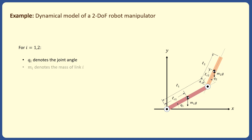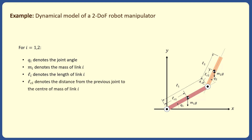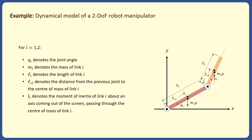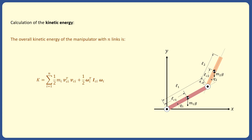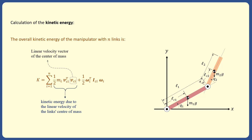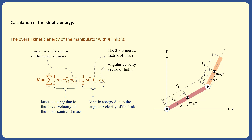We first make a few definitions. M sub i is the mass of link i. L sub i is the length of link i. L sub ci is the distance from the previous joint to the center of mass of link i. And I sub i is the moment of inertia of link i. We then calculate the overall kinetic energy of the manipulator. The kinetic energy of an n-link manipulator contains two main parts: the kinetic energy due to the linear velocity of the link's center of mass, where v sub ci is the linear velocity vector of the center of mass, and the kinetic energy due to the angular velocity of the links, where omega sub i is the angular velocity vector of link i and I sub ci is a 3-by-3 inertia matrix of link i.